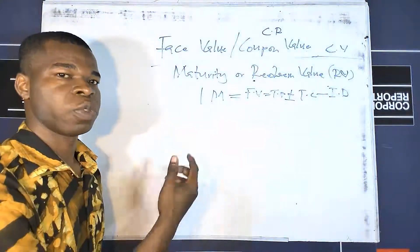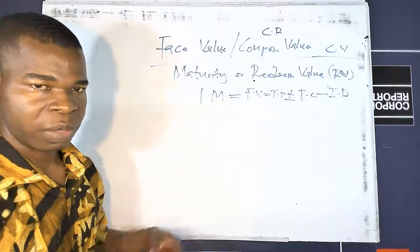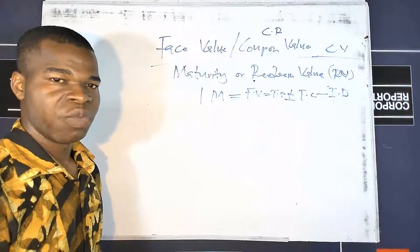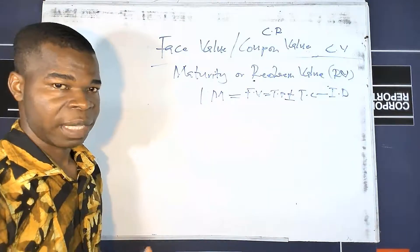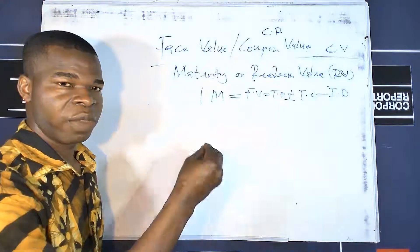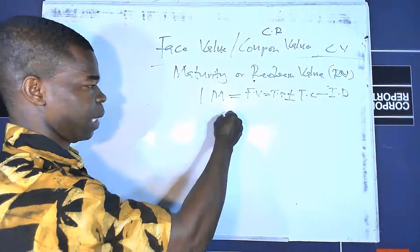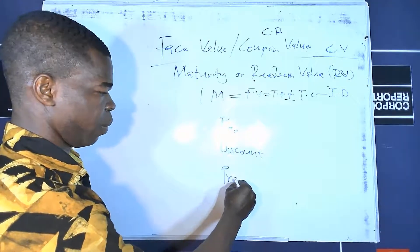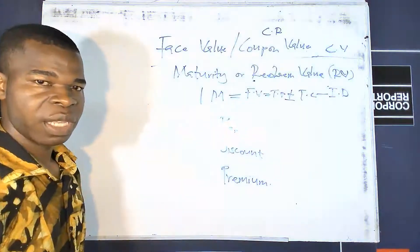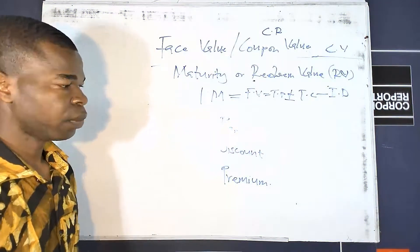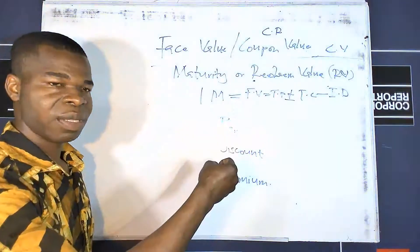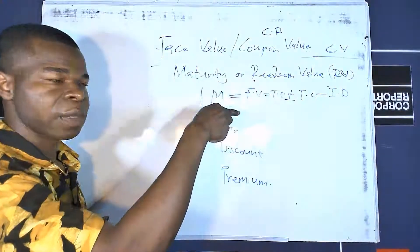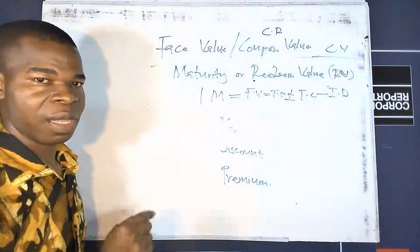Subsequently, we are supposed to amortize. Now, sometimes the question will tell you that the instrument is redeemed at par, at a discount, or at a premium. If faced with these terms, how do you handle them? Remember we have seen an issued discount in the initial measurement — here we are talking about a redeemed discount, which is different. How to treat them is different altogether.